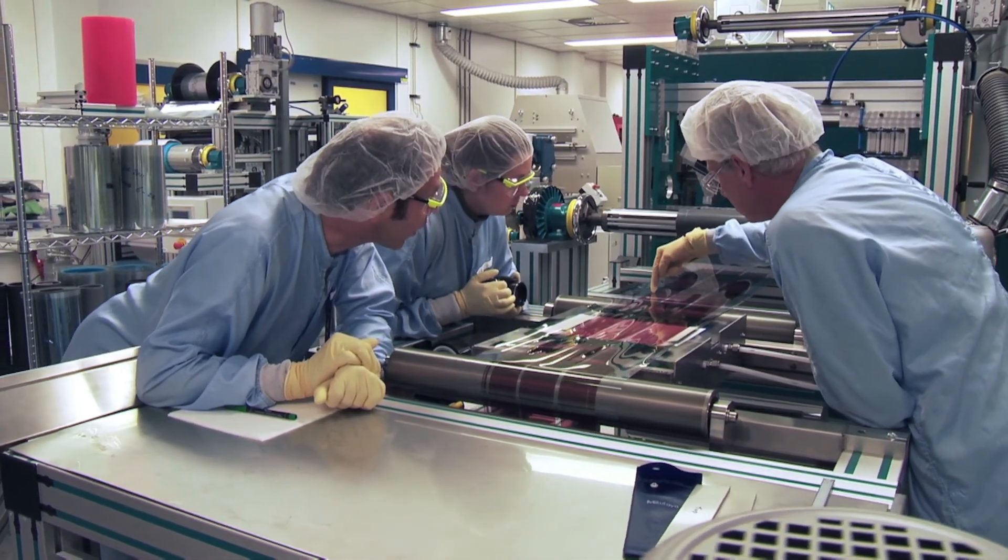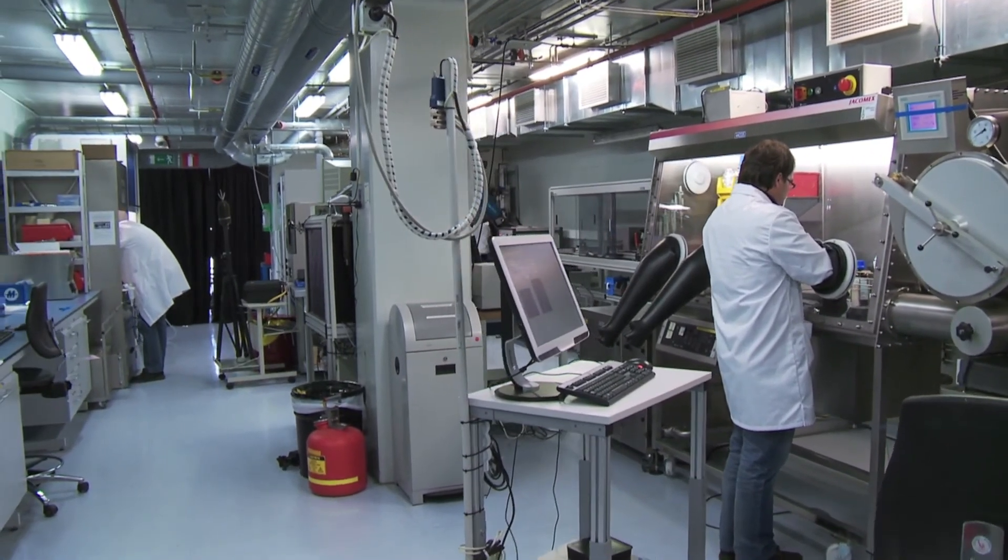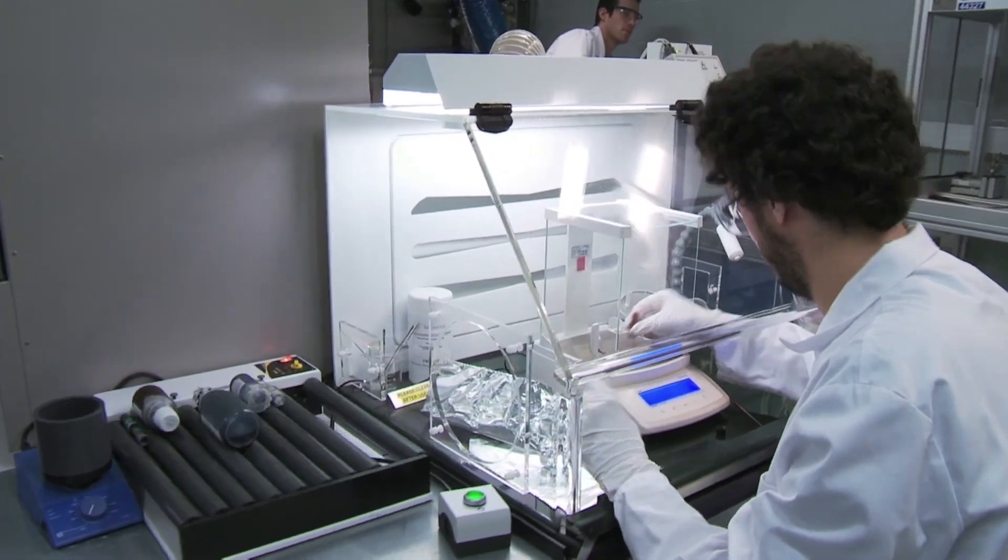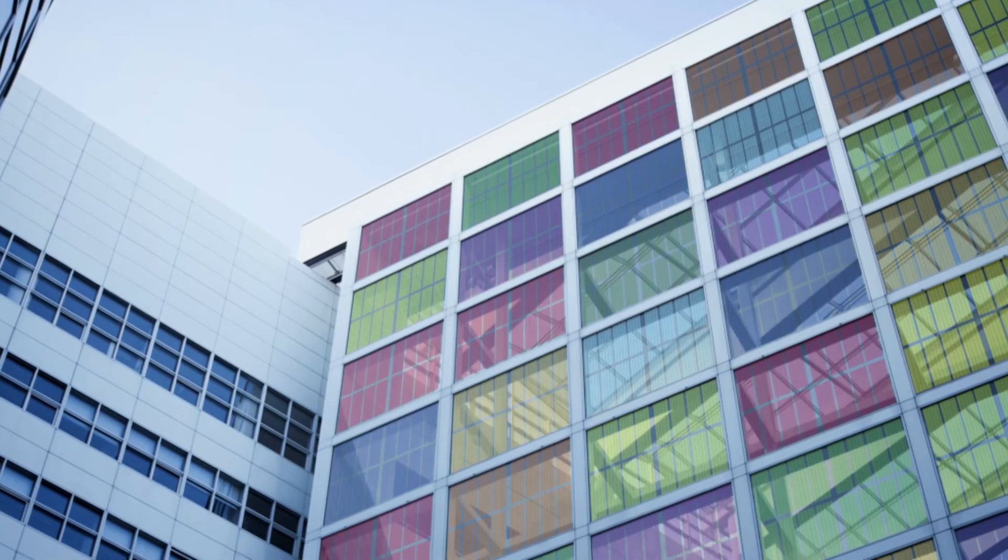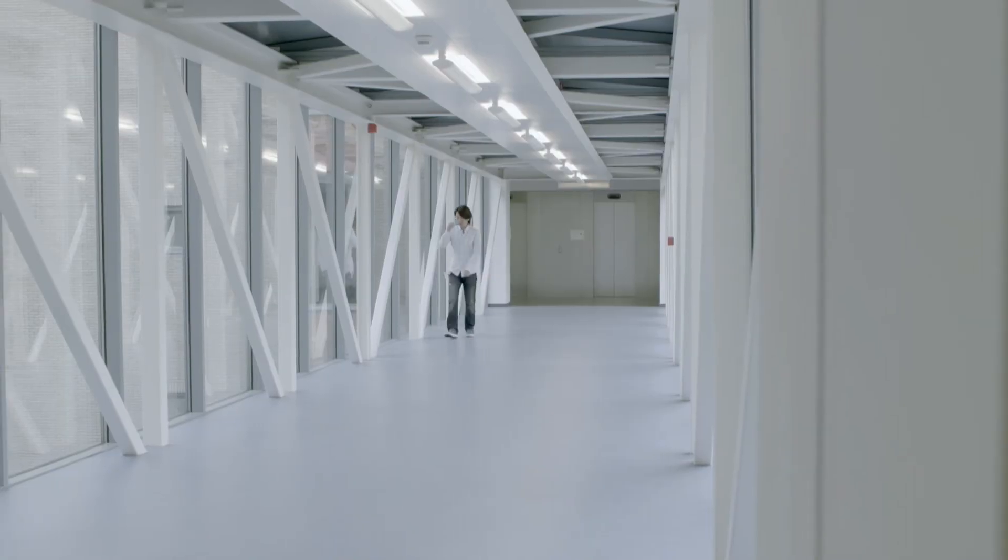Next to improving silicon technology, our scientists also work on thin-film solar cells. These have a large potential because they can be used in more applications, for example, integrated in building elements and windows where their semi-transparent potential can be fully exploited.